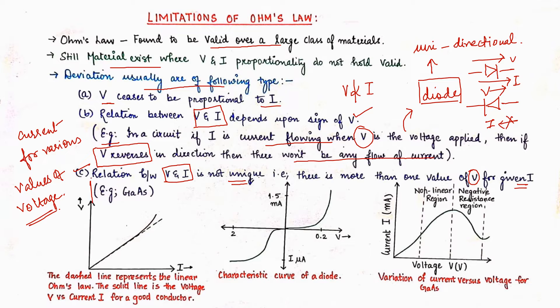One of the examples provided is gallium arsenide GaAs and it is a semiconductor.